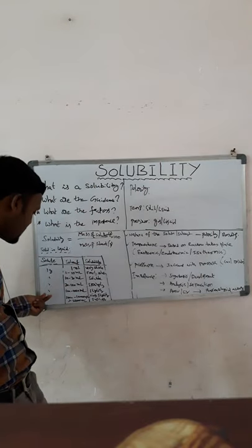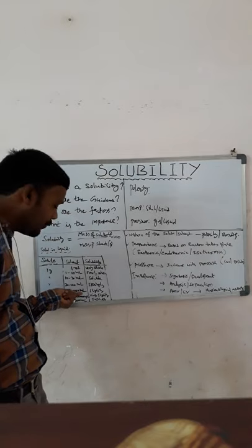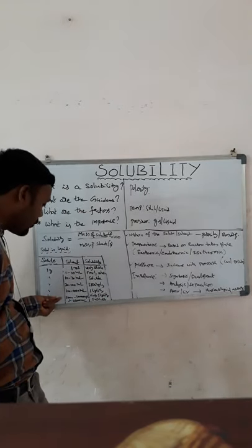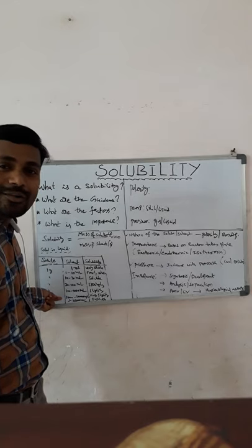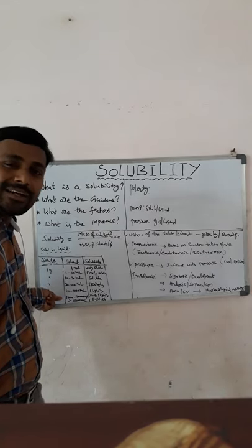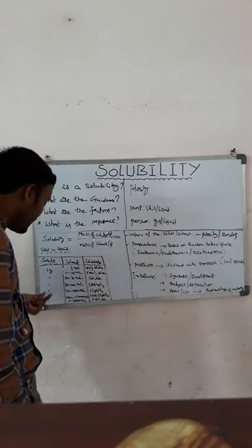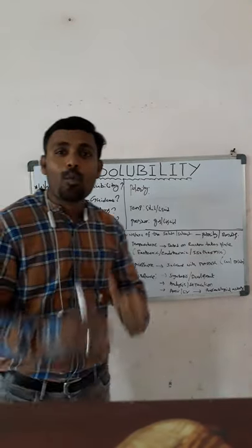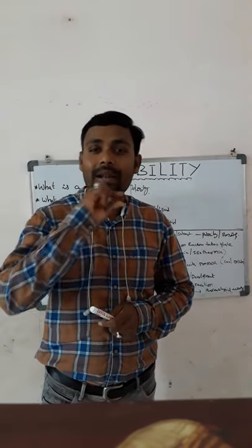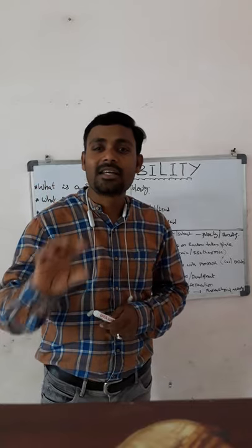If 1 gram of solute requires 100 to 1000 ml of solvent, it is very slightly soluble. If 1 gram of solute requires more than 10,000 ml of solvent, then we can say it is practically insoluble or insoluble in that medium.